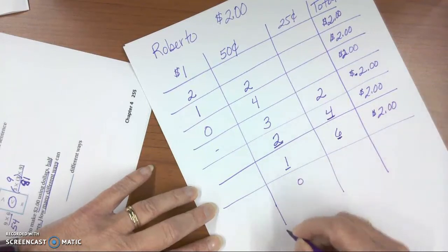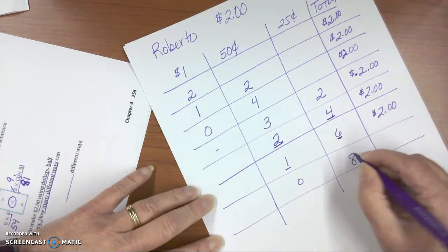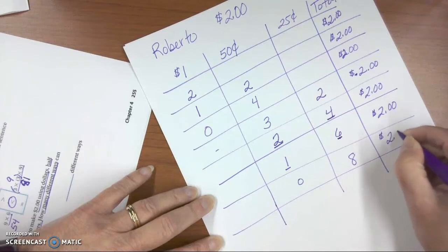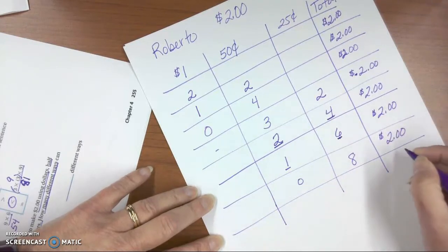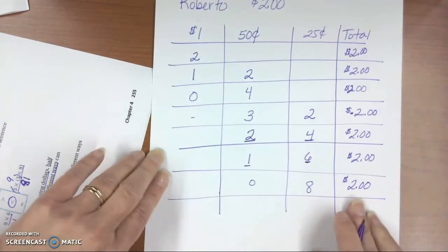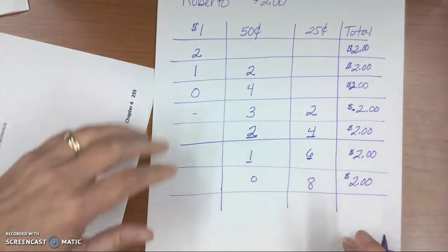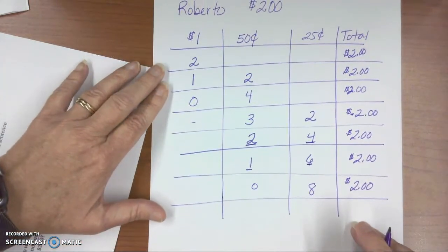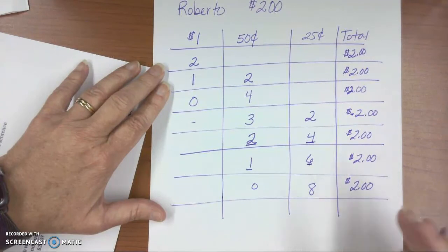And then what if I don't use any of those? That means I can use eight quarters, and eight times 25, or eight quarters would give me $2. So how many ways do we have to make $2 using dollars, 50 cents, and 25 cents, or dollar, half dollars, and quarters?